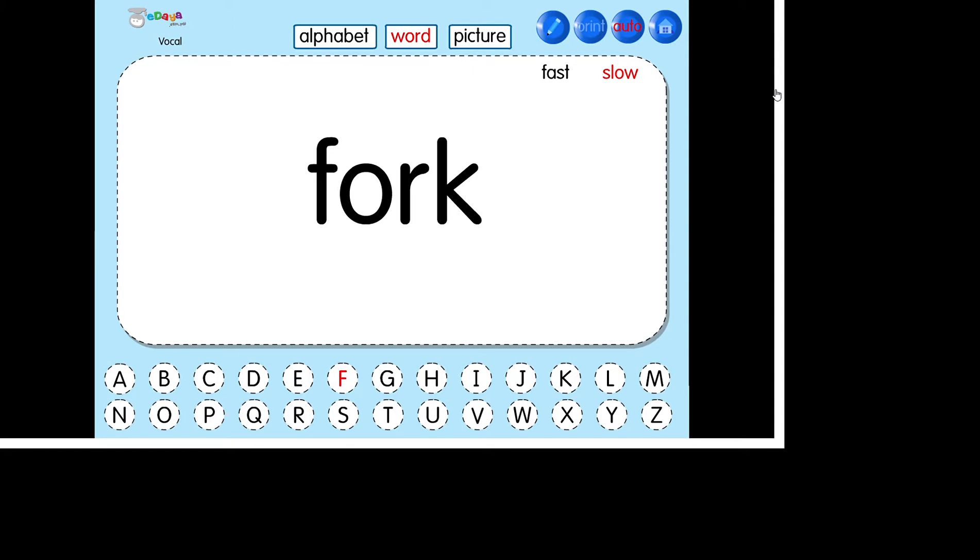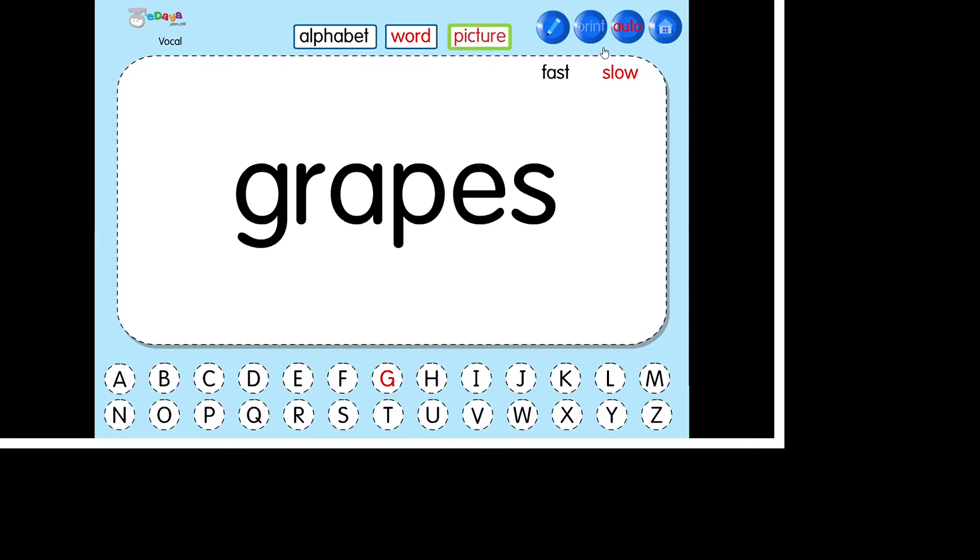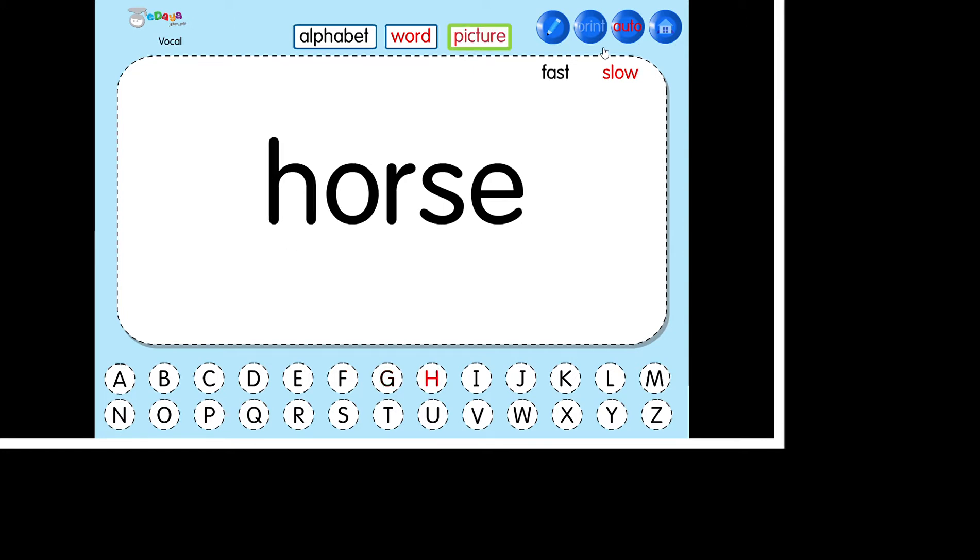Hawk. Fruit. Grapes. Grass. Horse. Hen. Island. Iron. Jam. Jelly. Key. King. Leg. Lion. Mango. Monkey.